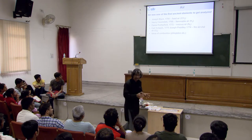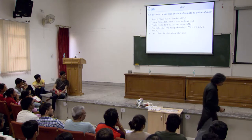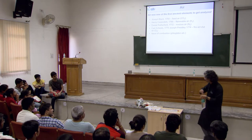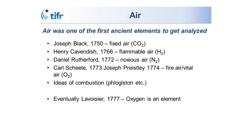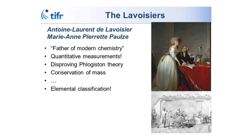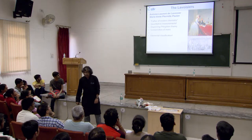Science always progresses through various false paths before we get to the right one. There were wrong theories about how things burn — the phlogiston theory. Eventually in 1777, Lavoisier decides that oxygen is an element. Lavoisier was called the father of modern chemistry, but it should not be Antoine Lavoisier alone — gender equality — it's the Lavoisiers. There is Antoine Lavoisier and his wife, Marie Anne Pierrette Paulze. Wherever Lavoisier was doing experiments, she was there with him.